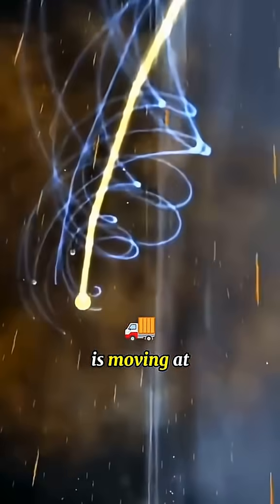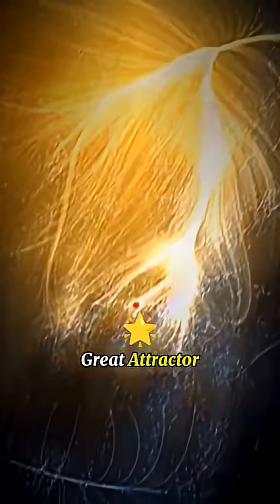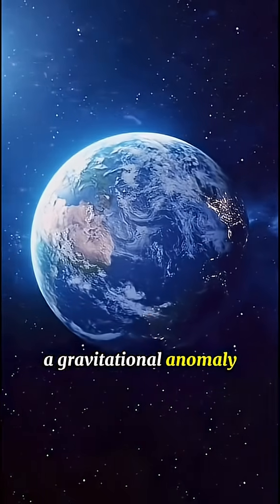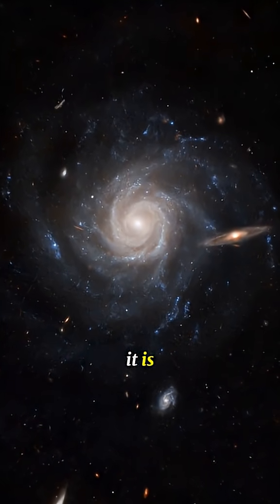The entire Milky Way is moving at 2.1 million kilometers per hour toward the mysterious Great Attractor, a gravitational anomaly so powerful that it's pulling thousands of galaxies toward it, and we have no idea what it is.